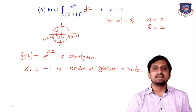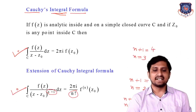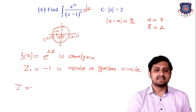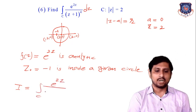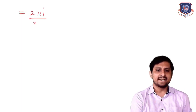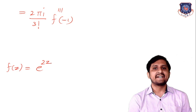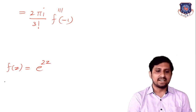Using the extension of Cauchy's Integral Formula — integration of f(z) upon (z minus z₀)^(n+1) dz equals 2πi upon n factorial — let capital I equal the integration of e^(2z) upon (z+1)^4 dz. That equals 2πi divided by 3 factorial times the third derivative at point −1. So f(z) = e^(2z), and the first derivative f′(z) = 2e^(2z).